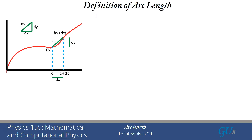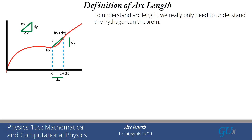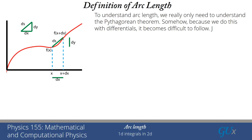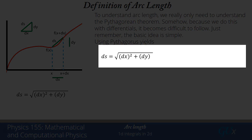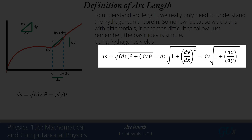There's a picture on the left here that I'm going to go over in great detail in just a moment. The key point to understand arc length is we really just need to understand the Pythagorean Theorem. Because it's the Pythagorean Theorem with differentials dx and dy, it seems to become difficult to follow. But the basic idea is very simple. If we use Pythagoras, it tells us that this element along the curve, ds, is the square root of dx squared plus dy squared.